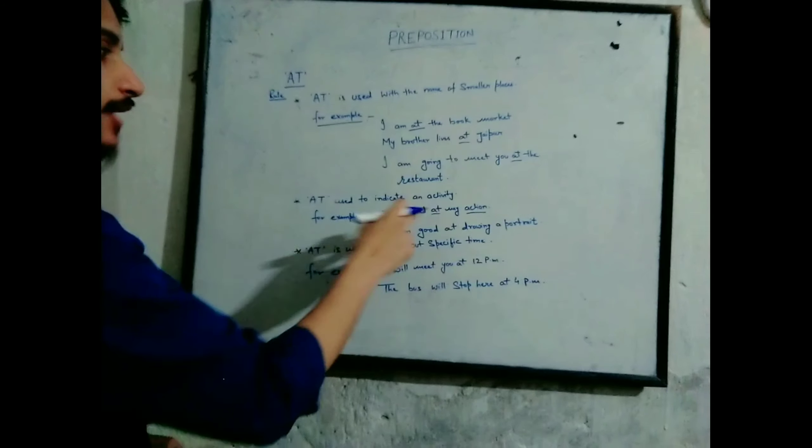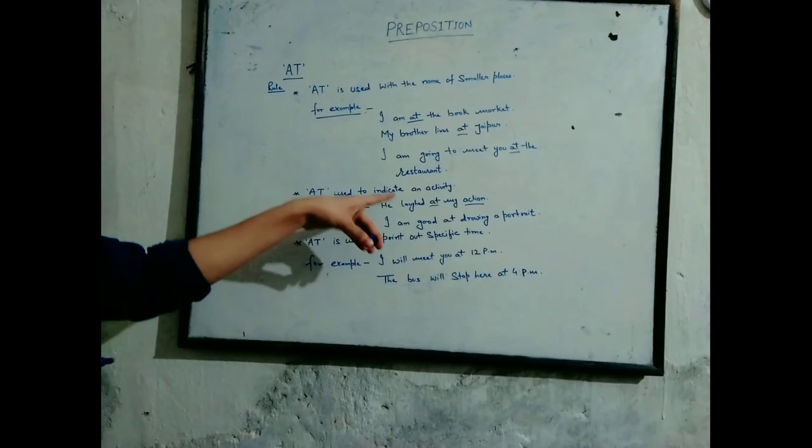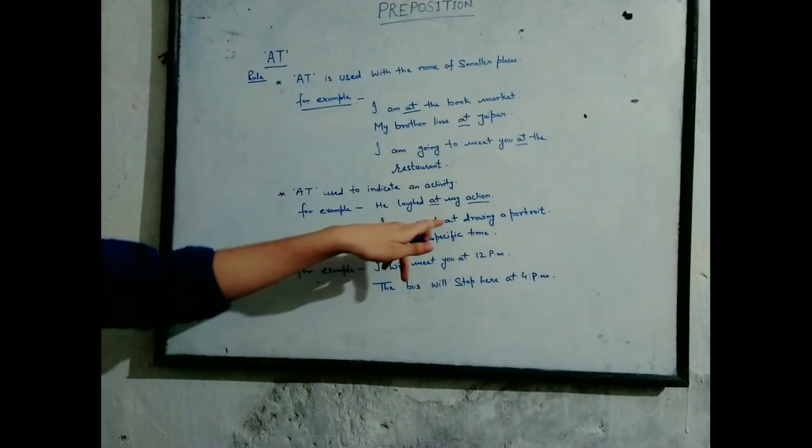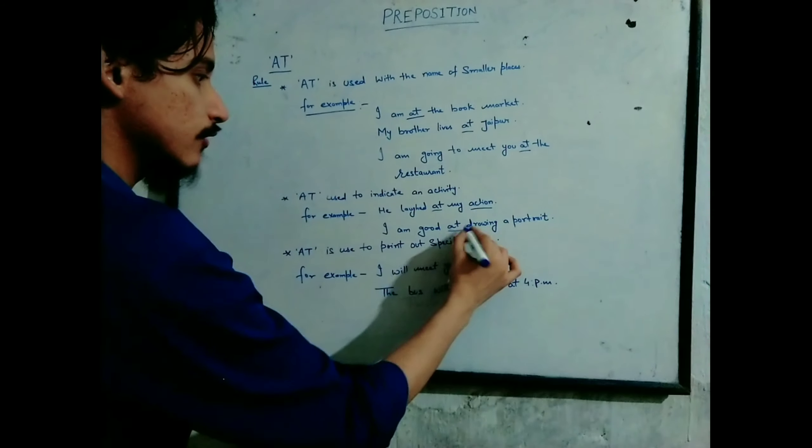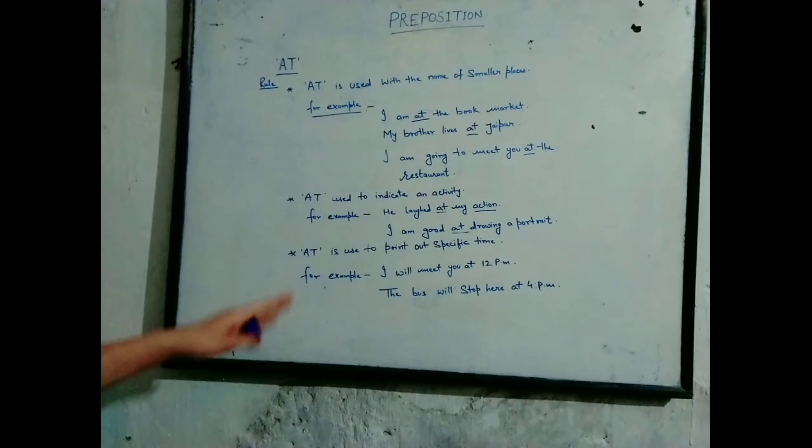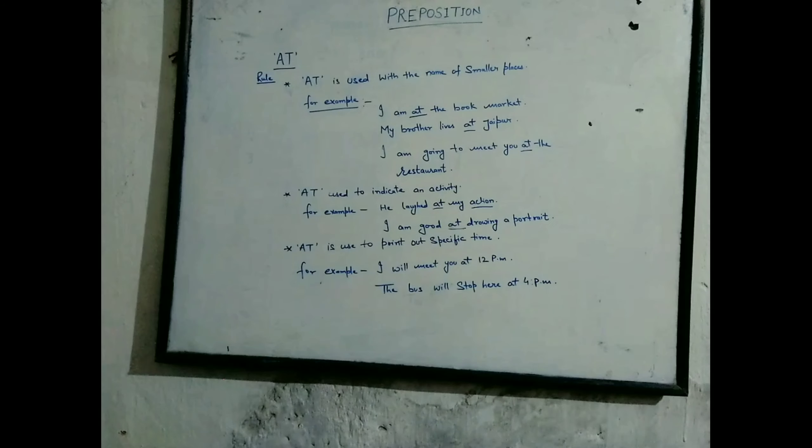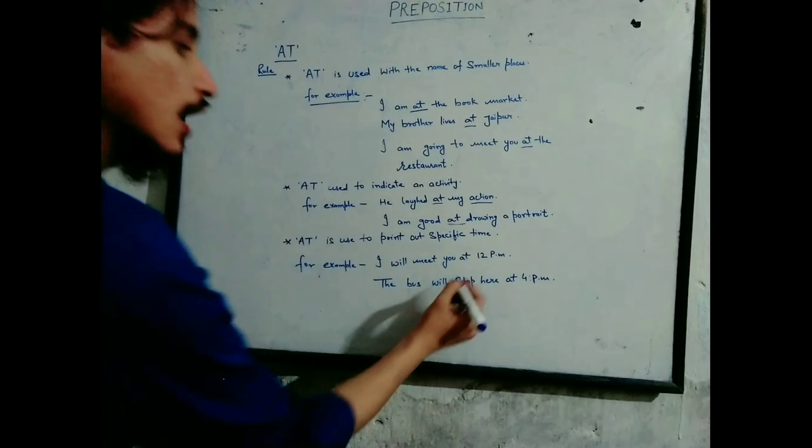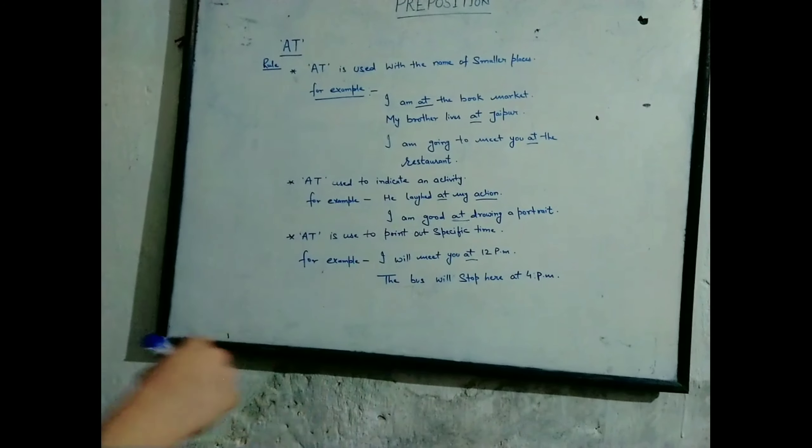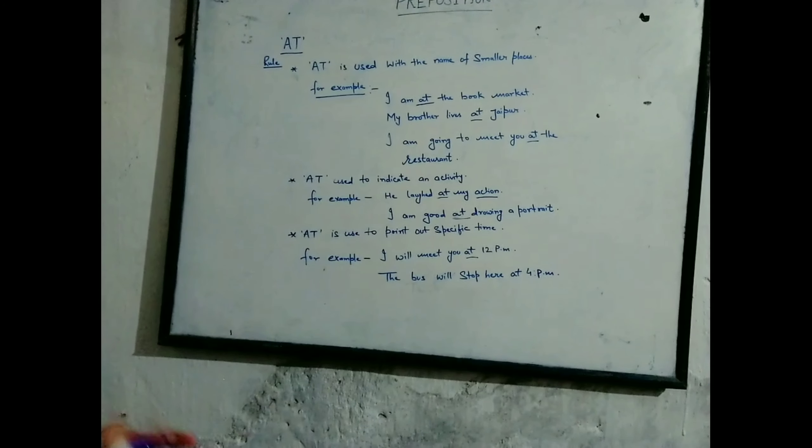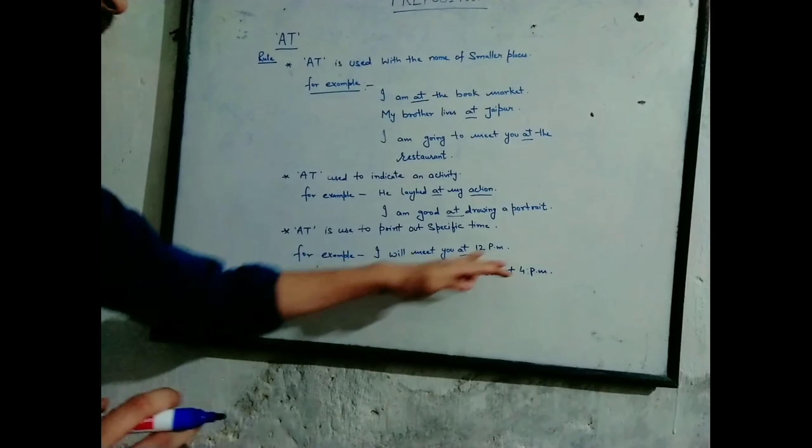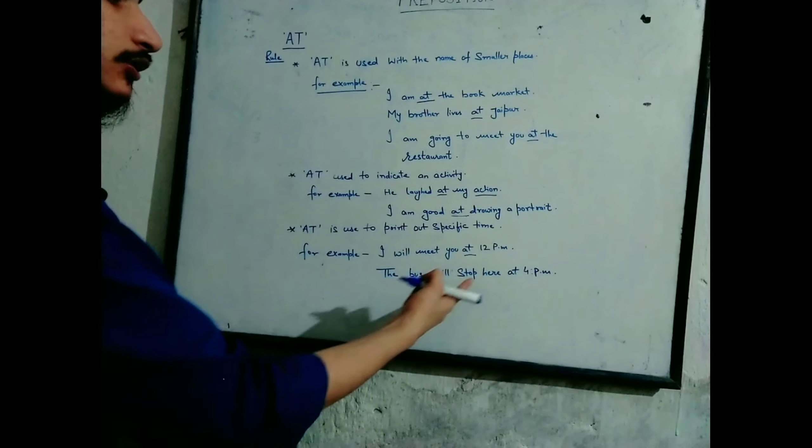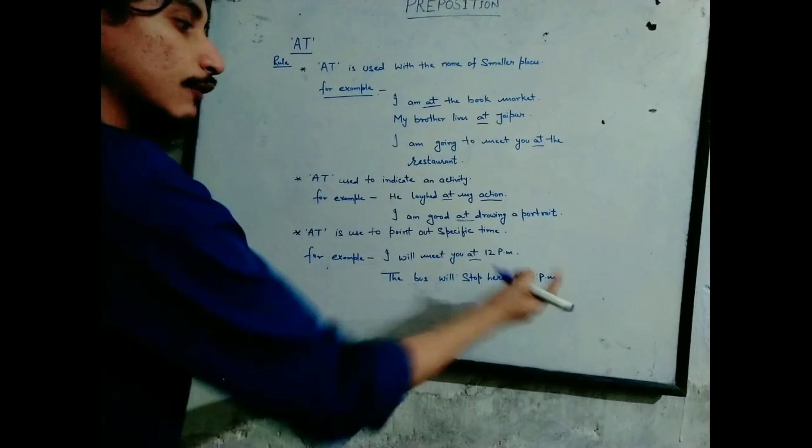'At' is also used to point out specific time. For example, I will meet you at 12 p.m. So 12 p.m. is a specific time, so we will use 'at'. The bus will stop here at 4 p.m.